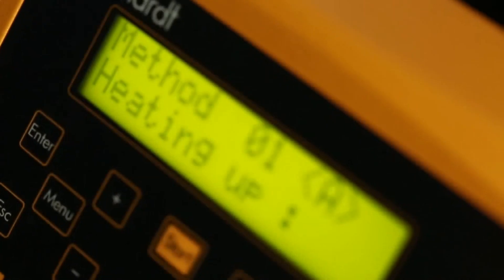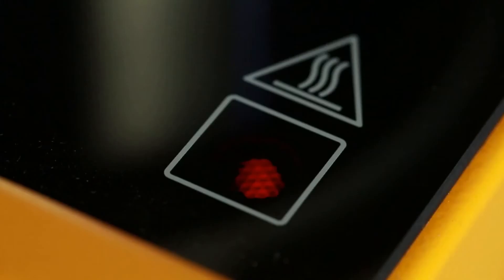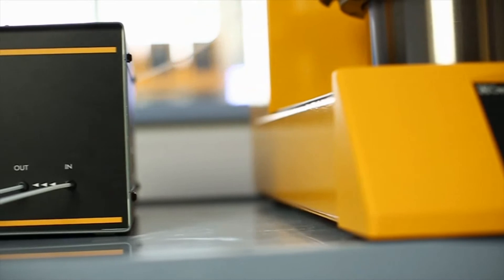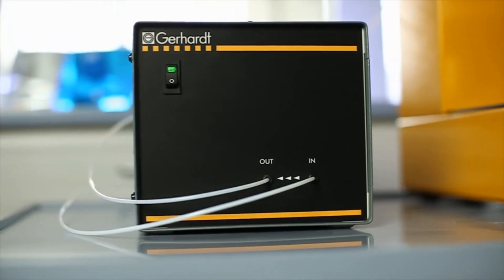The alpha-amylase NDF value can also be determined automatically, without interrupting the process. The amylase is fed in through an external dosing pump.